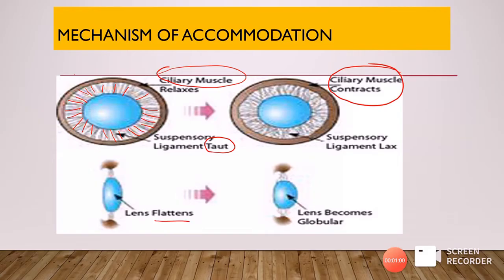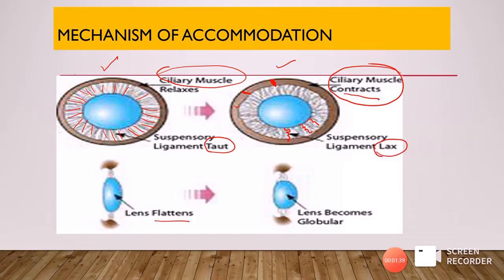When we look at a near object, there is a need for accommodation and the ciliary muscle will contract. As the ciliary muscle contracts, the band of ciliary body increases in width. As the width increases, the space narrows and the suspensory ligaments become loose or lax. As the ligaments become loose, their hold on the lens also becomes loose, and the lens becomes more free to move. The lens structure and lens capsule are very elastic.